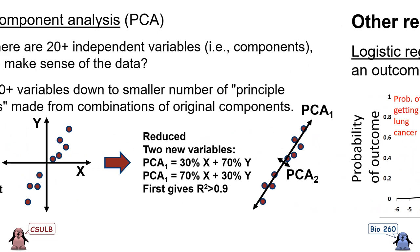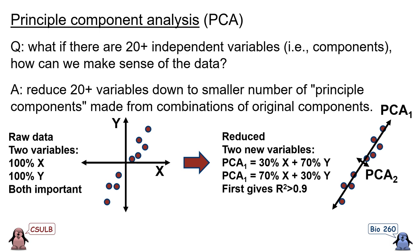Principal component analysis is a very important technique, and you can think about it as what we end up doing if we have a multivariate regression with too many variables. Consider the question of what to do if we have 20 or more independent variables. The solution is to reduce those large number of variables down to a smaller number of principal components, which are new variables made from combinations of the original components.